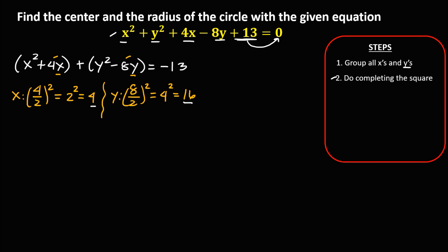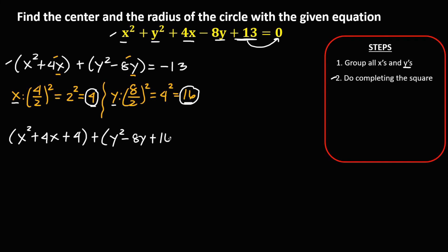Then add these numbers to create a new equation. So this becomes x squared plus 4x plus 4, then plus y squared minus 8y plus 16. Then equals negative 13. Since we add 4 for x, we also need to add 4 on the right side. Since we add 16 for y, we also need to add 16 on the right side.